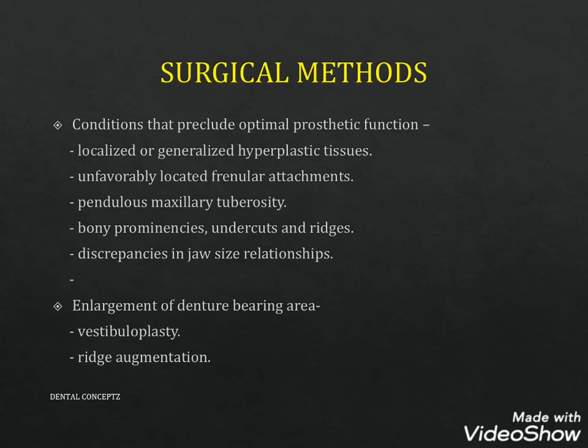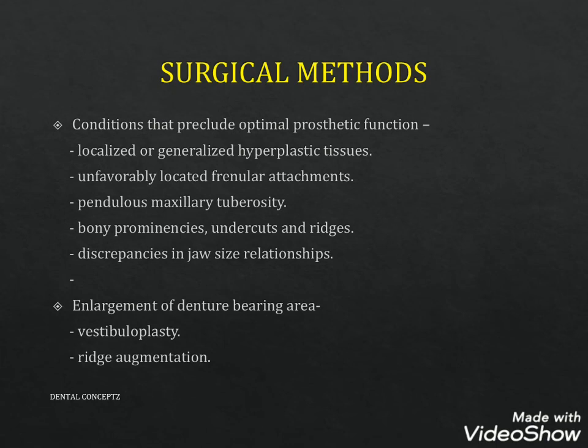Surgical methods address conditions that preclude optimal prosthetic function, including localized or generalized hyperplastic tissues, unfavorably located frenular attachments, pendulous maxillary tuberosity, bony prominences, undercuts, and discrepancies in jaw size relationships. For enlargement of the denture-bearing area, procedures like vestibuloplasty or ridge augmentation are performed.